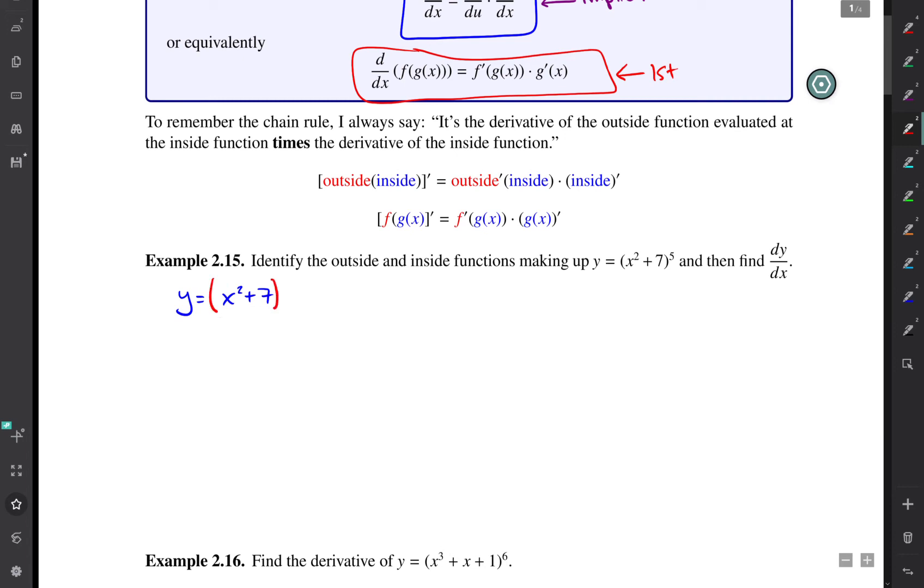And the inside function is x² + 7. So you'd say that g of x in this case is x² + 7, and so f of x, the outside function, is x to the fifth. Okay, so this is the outside, this is the inside.